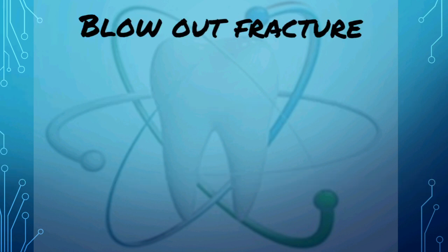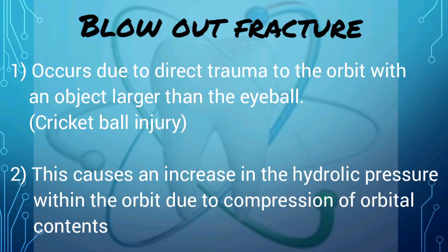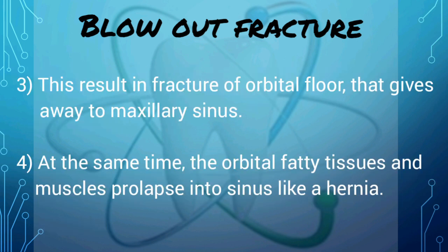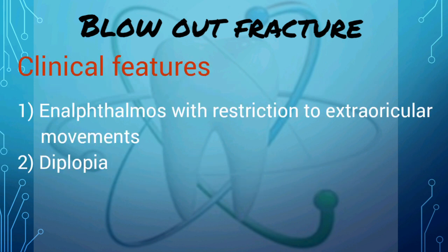Before going into the treatment of mid-facial fractures, it is necessary to understand the term blowout fracture, or the fracture of the floor of the orbit. The true blowout fracture occurs as a result of direct trauma to the orbit with an object larger than the globe size — for example, a cricket ball injury. This injury causes an increase in hydraulic pressure within the orbit resulting from compression of the orbital contents, resulting in the fracture of the orbital floor which gives way to the maxillary sinus. At the same time, the orbital fatty tissue and sometimes muscles prolapse into the sinus like a hernia. The clinical symptoms include enophthalmos with restriction of extraocular movements, and at times diplopia may be present.